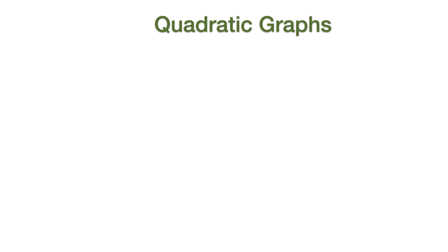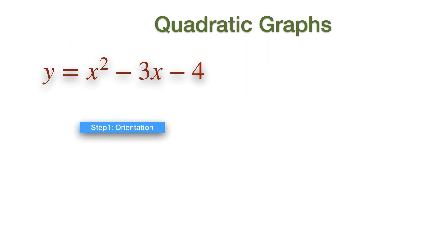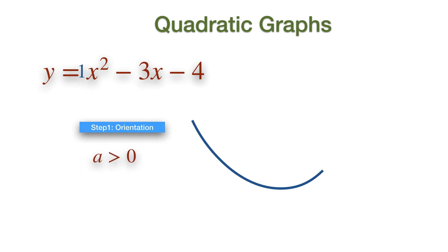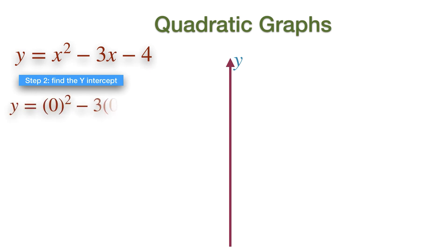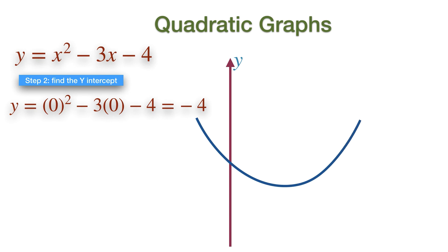Suppose that you want to sketch the graph of this function. The first thing to check is the orientation of the graph. Since the coefficient of X squared is 1 and it's greater than zero, the orientation of this graph will be a smiley face. In the second step, we need to find the Y-intercept. When the graph crosses the Y-axis, the X-coordinate is zero, so we substitute X as zero into the equation, giving us the Y-intercept as minus four.